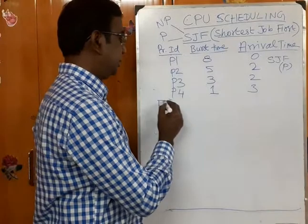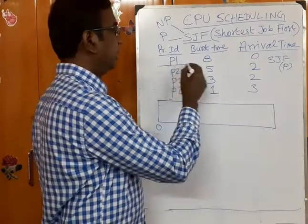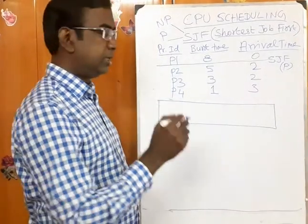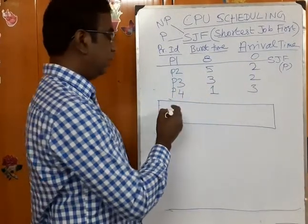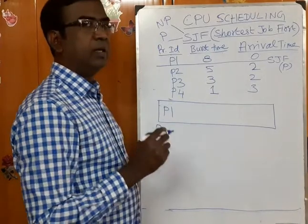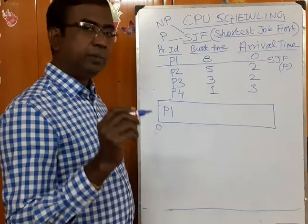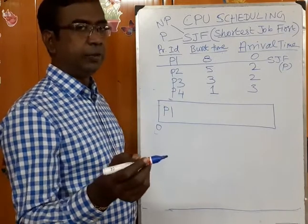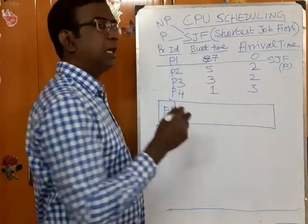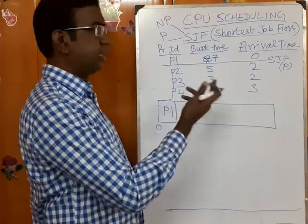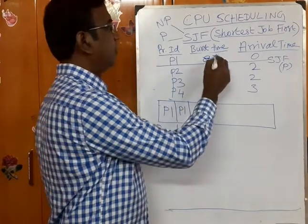Using the same Gantt chart, at time 0, only one job is there, so even though P1 has a large CPU burst time, by default P1 will enter. But in preemptive mode, for each and every second we have to monitor the ready queue. P1 executes for one second — leftover is 7 (since burst time was 3 in this example it is being tracked). After one second, still only P1 is there, so P1 executes for one more second — leftover becomes 6 at time 2.